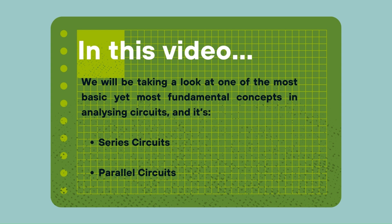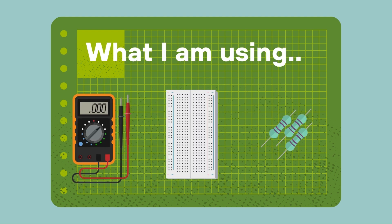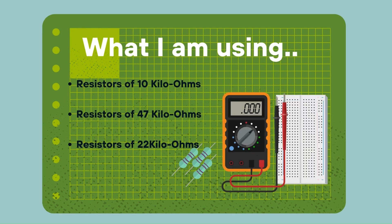Before diving into these concepts, let's clarify the tools we will be using today on the workbench. In this tutorial we have three main pieces of equipment: multimeters, breadboards, and any number of resistors you have lying around. The resistor values I am using in this video are 10 kilohms, 47 kilohms, and 22 kilohms.